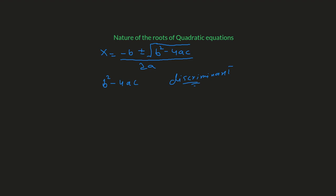Let's discuss how the nature of the roots of the quadratic equation depends upon b-squared minus 4ac. The quadratic formula gives us x equals negative b plus or minus the square root of b-squared minus 4ac, all over 2a. The type of roots we get really depends upon b-squared minus 4ac.